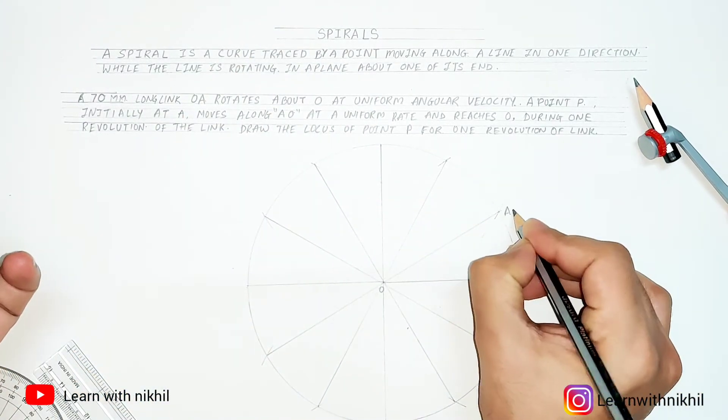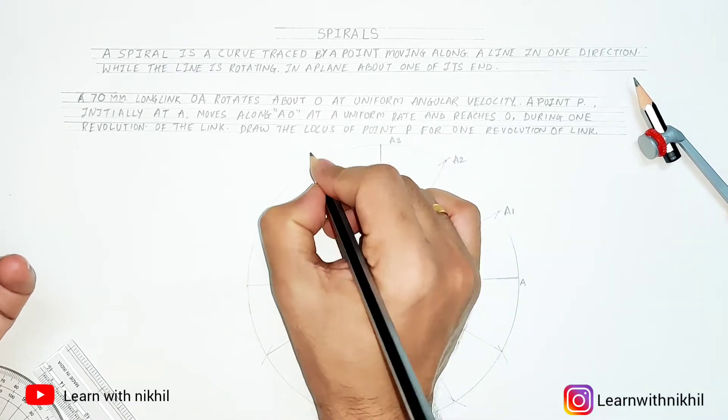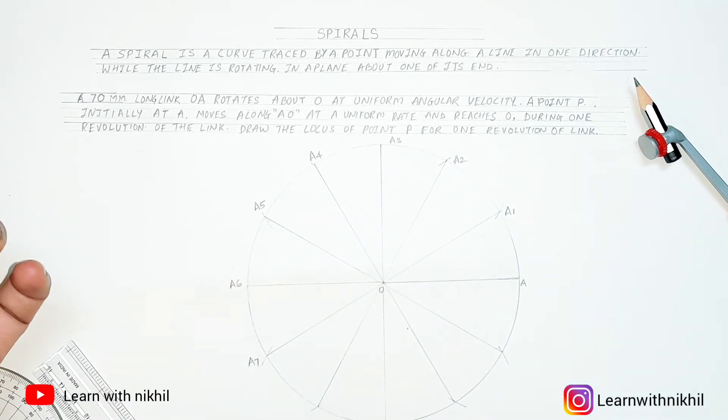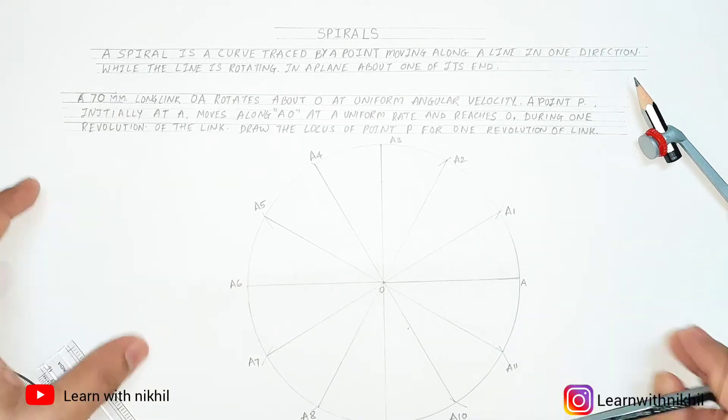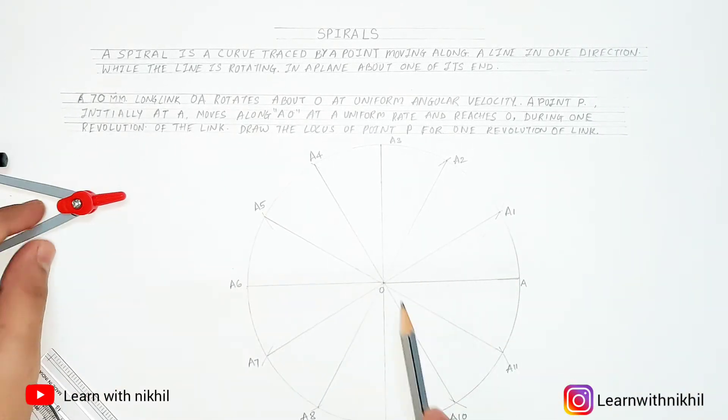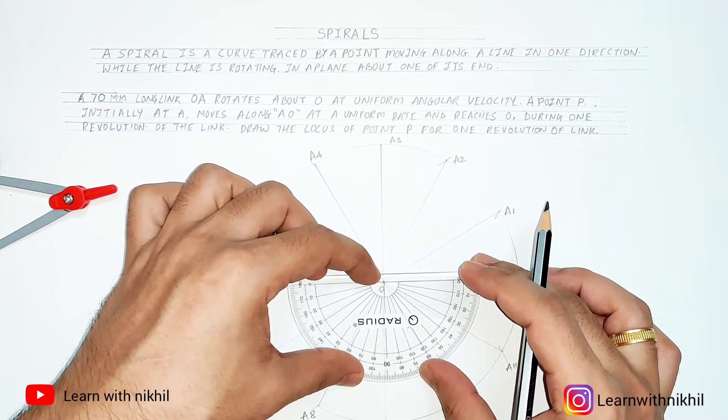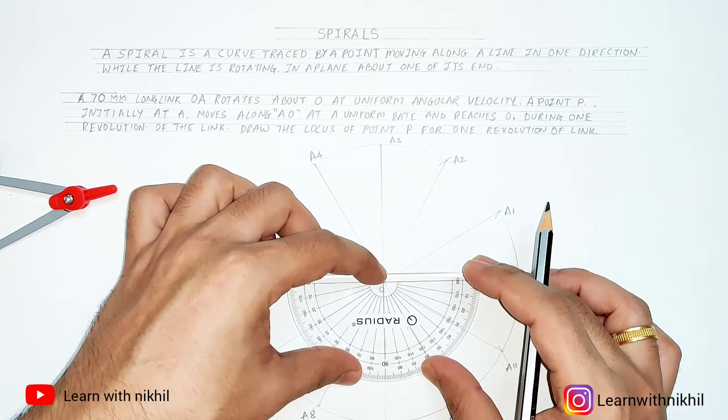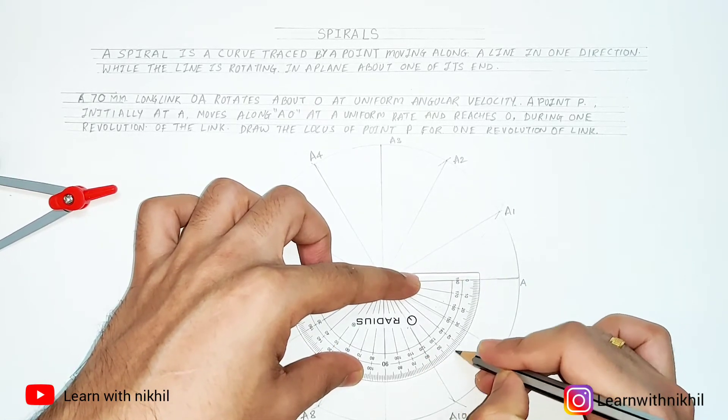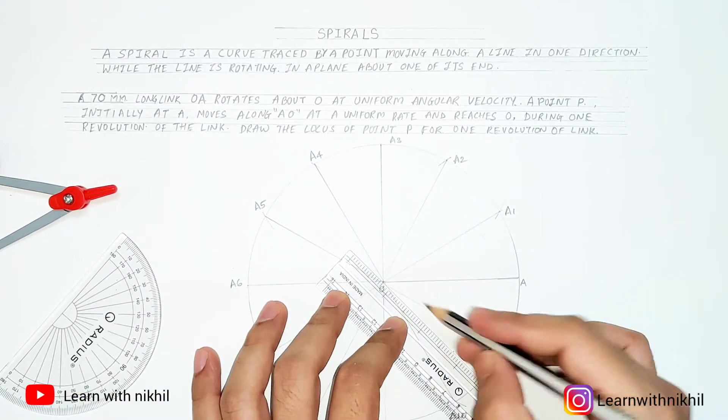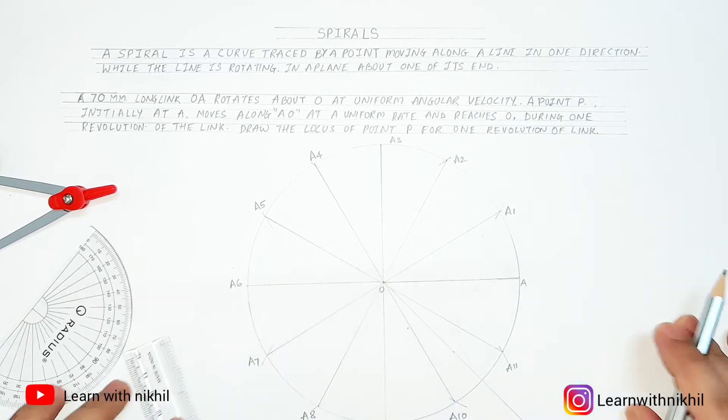Now with this we have divided the circle into 12 equal parts. Join these lines and we are done marking them as A1 to A12. Now this is a line OA. As we have divided the circle into 12 equal parts, we will divide the line OA to A12 also into 12 equal parts.